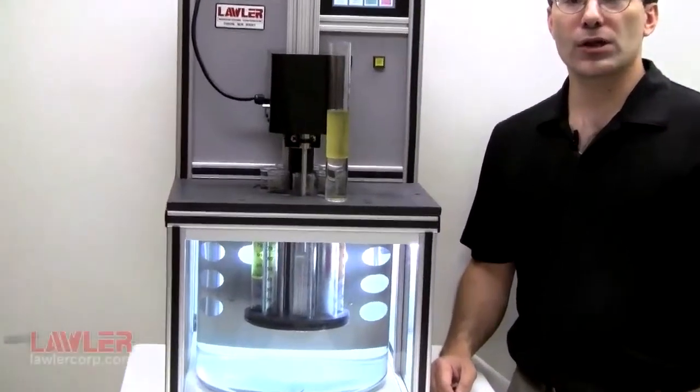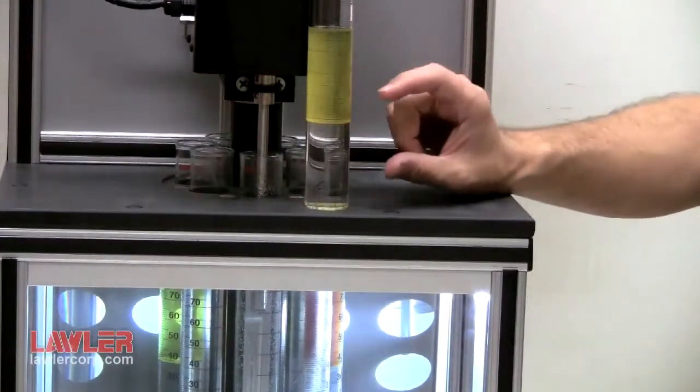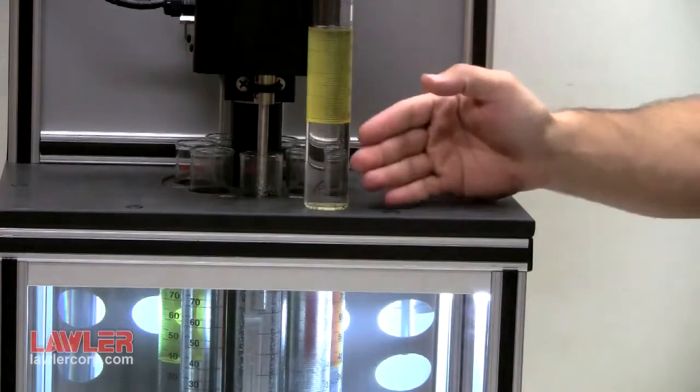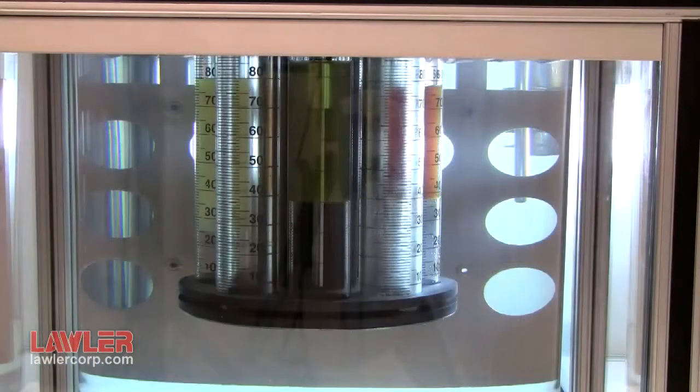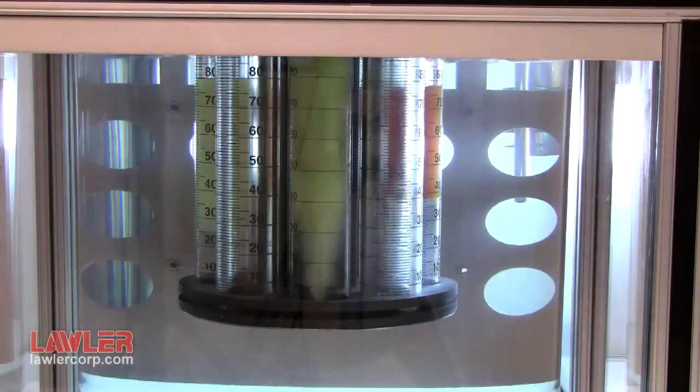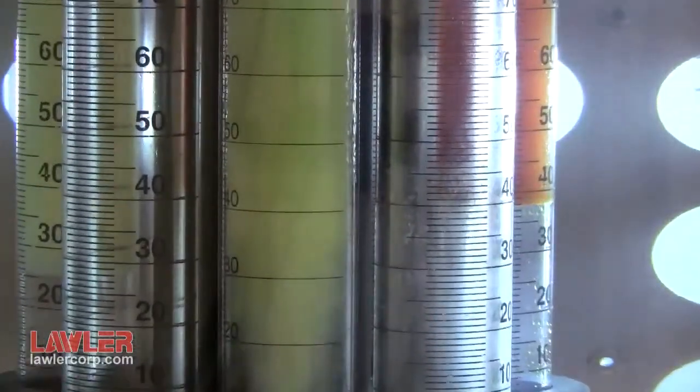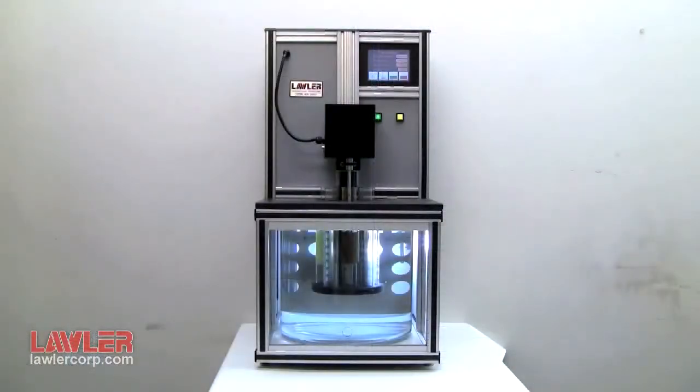ASTM D1401 Water Separability Method takes equal parts of lubricating oil and water in a graduated cylinder, then vigorously stirs them at 1500 RPM. The resulting emulsion must separate back to oil and water quickly for the oil to be considered good. This video reviews how the Lawler Model 305 not only performs the test, but has features to improve precision and prevent future maintenance issues.